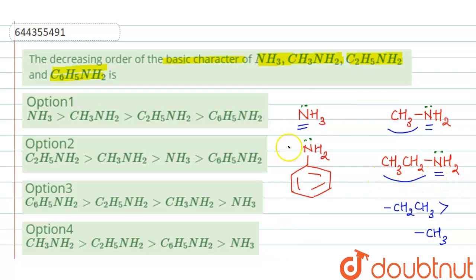Whereas in case of this aniline, this lone pair of electrons on nitrogen, they are involved in delocalization over the benzene ring. So that's why this aniline is a weaker base than all of them. Because in all of them the lone pair is localized, whereas in this case the lone pair is not localized, so it is not easily available for donation.